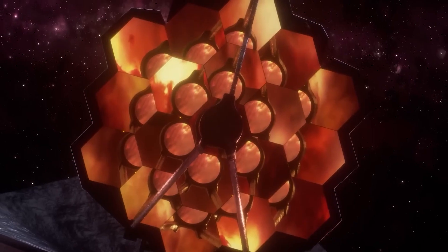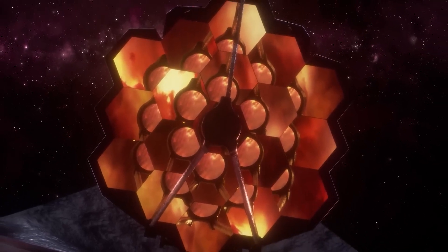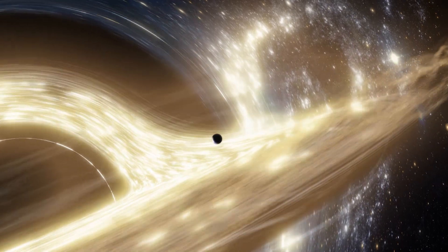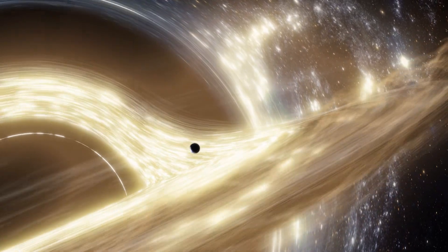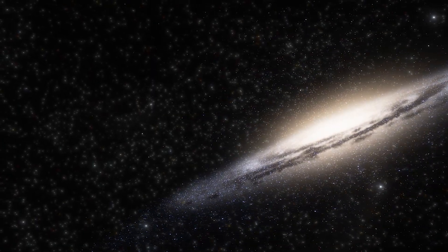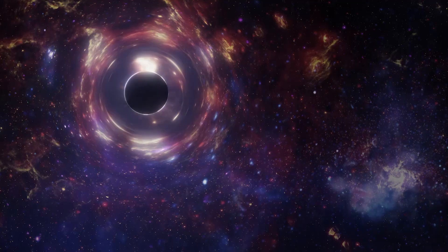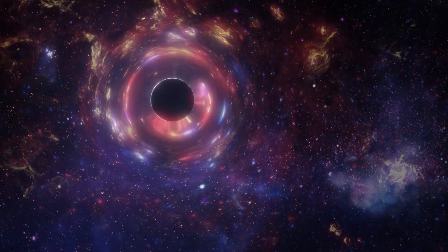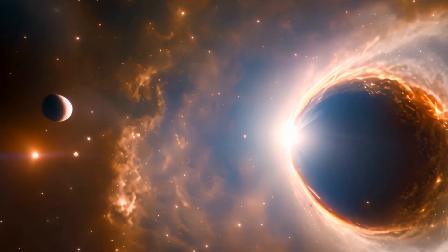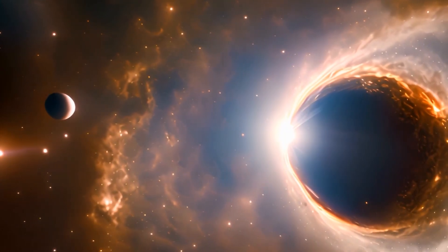Zooming in on GNZ-11, JWST revealed an environment that is both chaotic and strangely structured. Streams of gas swirl into what appears to be an actively feeding black hole at the galaxy's center, a quasar-like core embedded in a galaxy only a fraction the size of the Milky Way. The mass of the central black hole, estimated to be in the range of several million solar masses, is staggering considering the youth of the universe at this epoch.